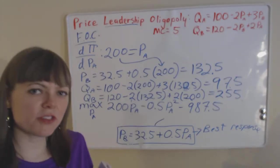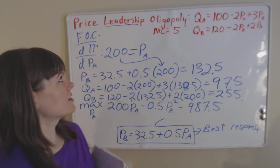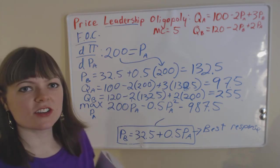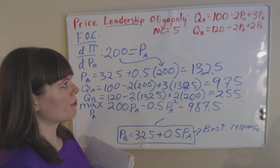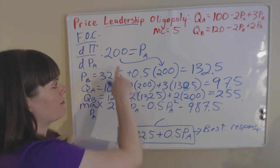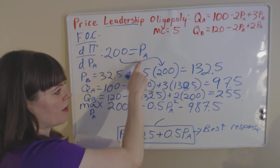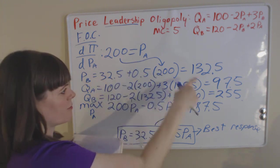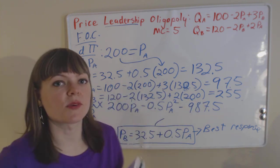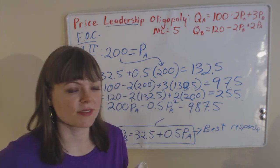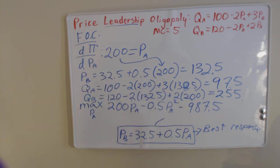We've fully solved this price leadership duopoly problem by finding the price of firm A, the price of firm B, and the quantity associated with both firms.